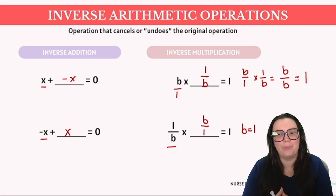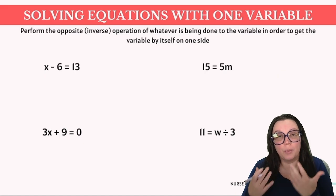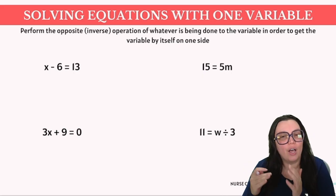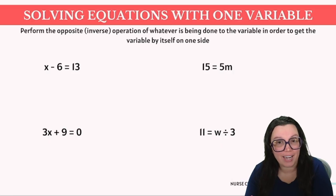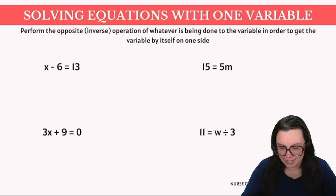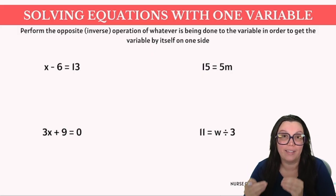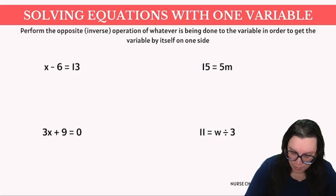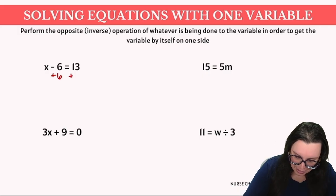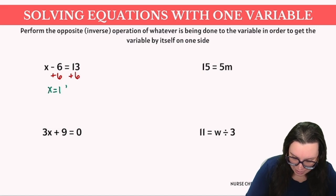Let's take a look at some examples for solving equations using one variable. When performing these operations, we want to perform the opposite or inverse operation of whatever we are doing on one side of the variable to the other side of our equation. Our first example: x minus 6 equals 13. We want to isolate x, so we do the inverse — we add positive 6 to both sides. That gives us x equals 19. We just solved our first equation.